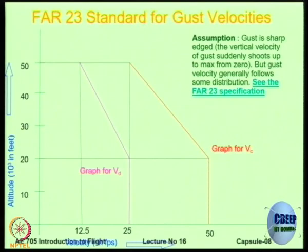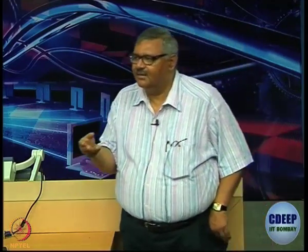This is when you are at VD the design diving speed. At cruising speed the gust velocity is 50 feet per second till 20,000 feet constant and less below that. What basically you have to do is you have to now start calculating delta NZ at various values of flight.